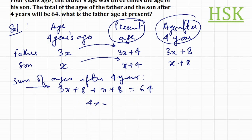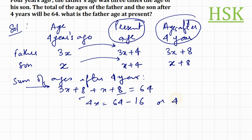So we write this as 64. Therefore 4x is equal to 64 minus 16 — the 8 and 8 add up and go to the other side — so 4x is equal to 48, which gives x is equal to 12.